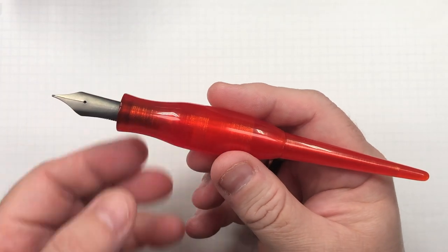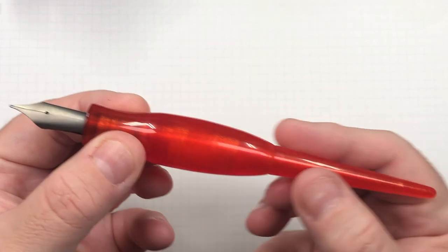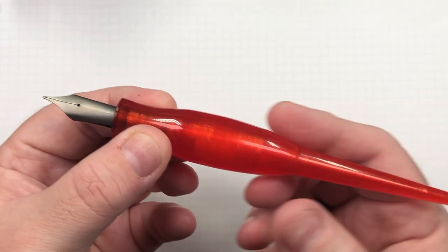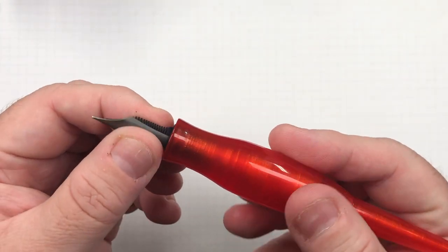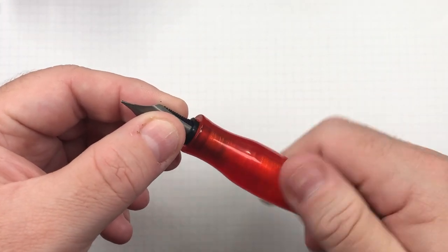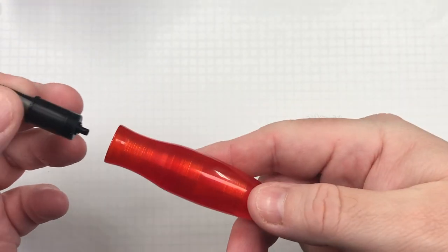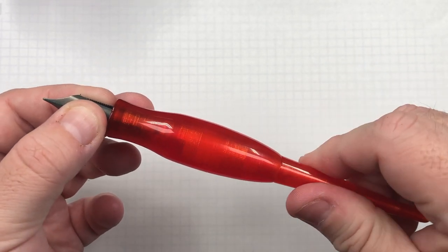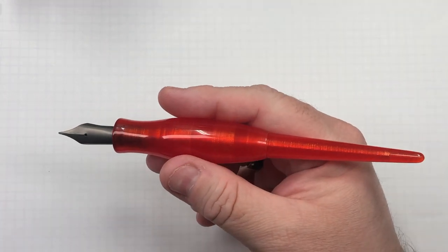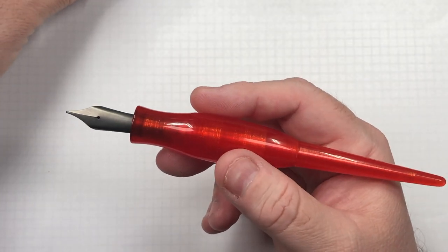This is a 3D printed pen from William Shakur in the UK. He prints this material 3D and it has a number 8 size Bock nib which I can unscrew. So it is just a dip pen holder for a number 8 size Bock nib and the idea is I want to have consistency with the writing sample.